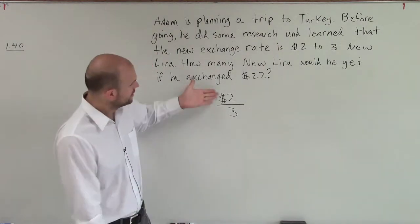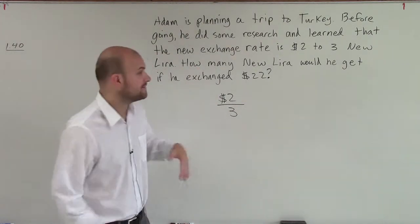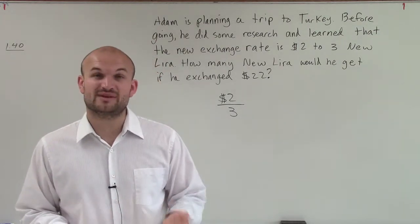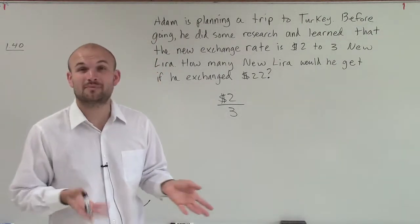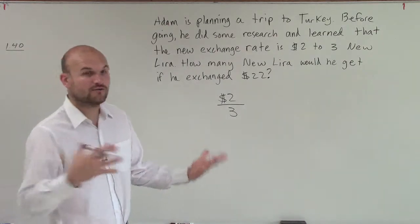Remember, our ratio is a comparison, $2 to 3 new lira. Now to solve this, first of all, we need to set up an equation, and also we need to set up a variable. So we need to see what our variable is going to represent.